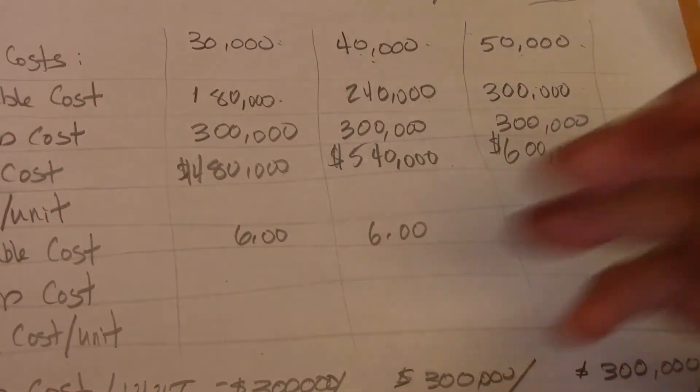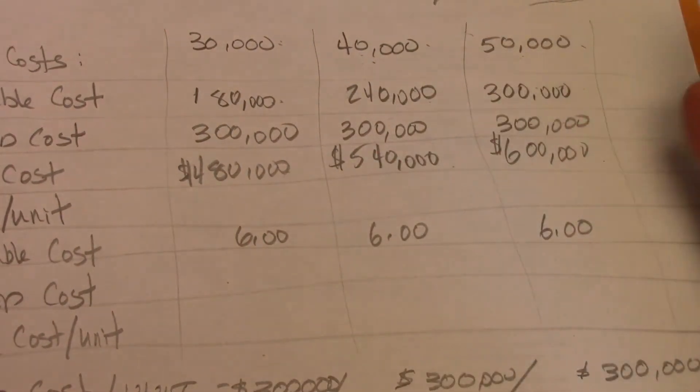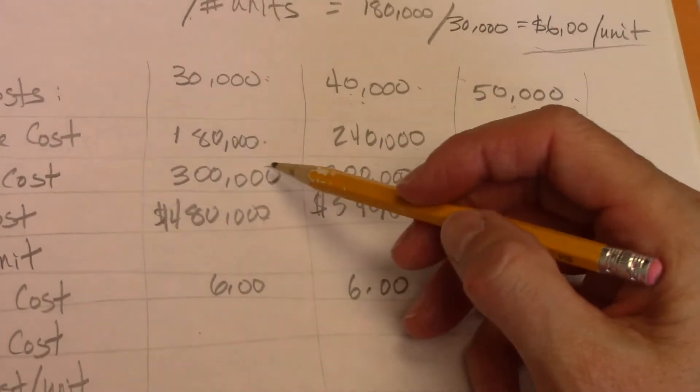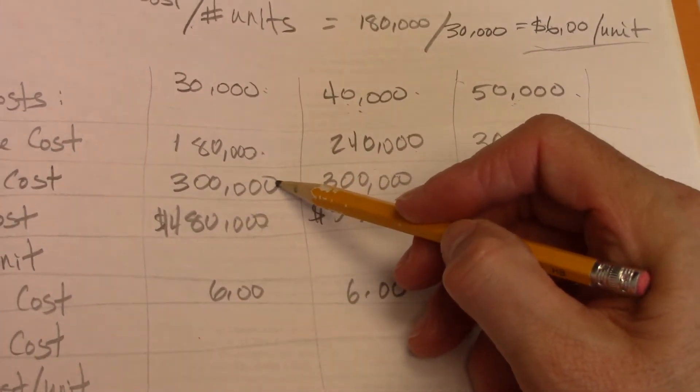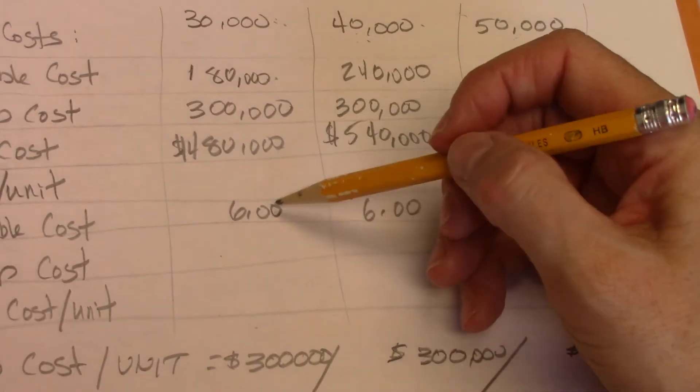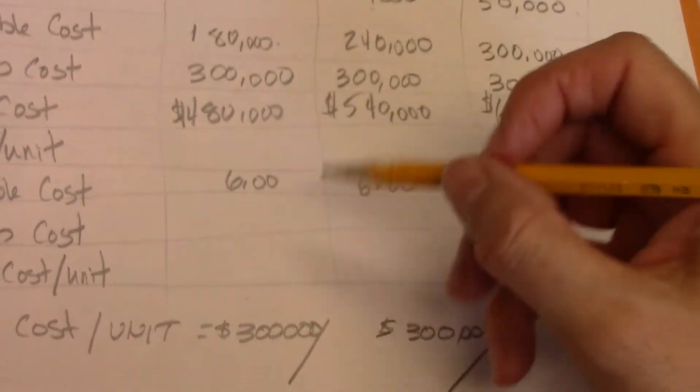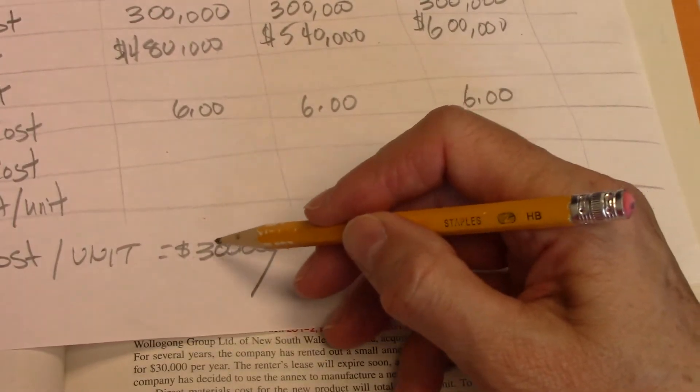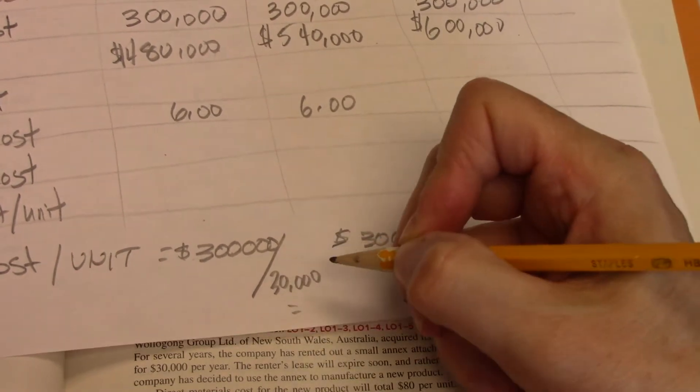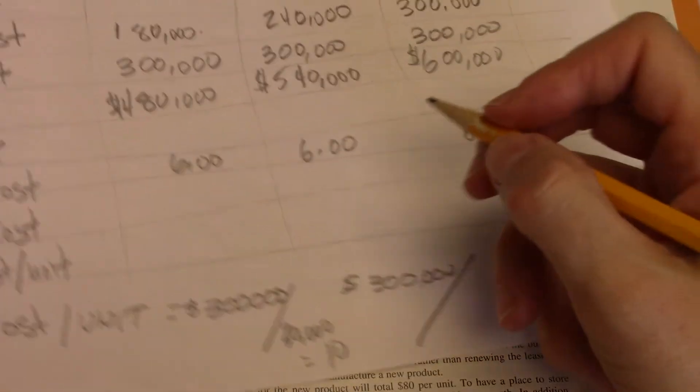Fixed costs, the more units I create, the lower my fixed costs get. Because I'm going to take my total fixed costs and divide them by the number of units. So for 30,000 units, I take 300,000 and divide it by 30,000, and I get $10 per unit.